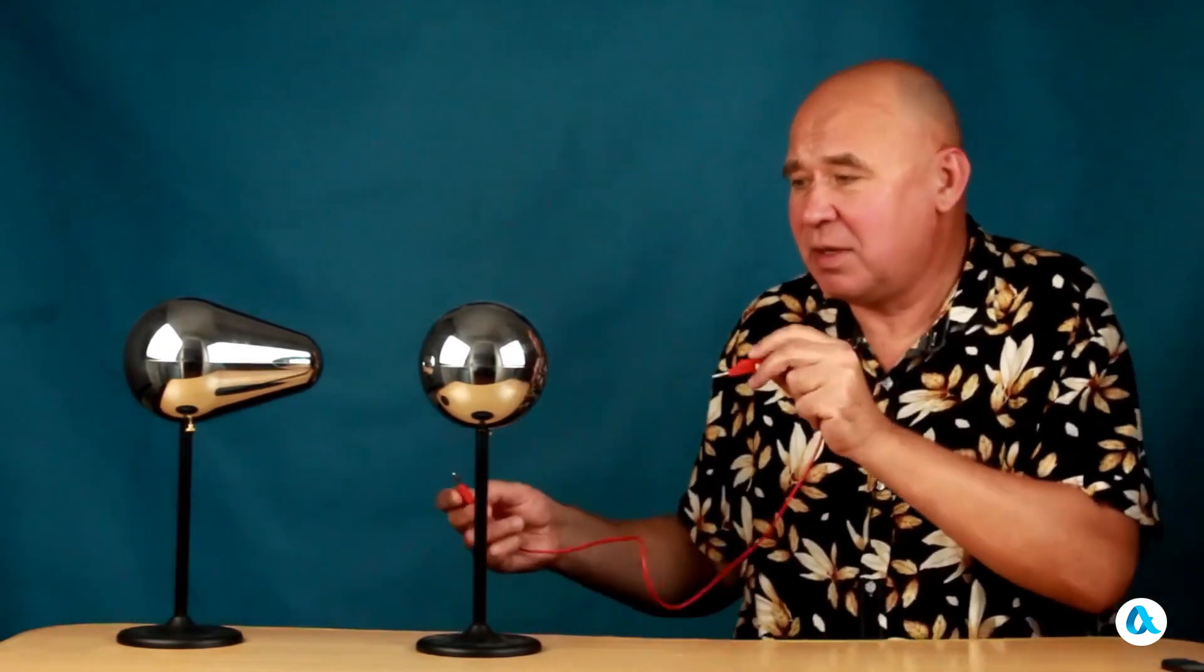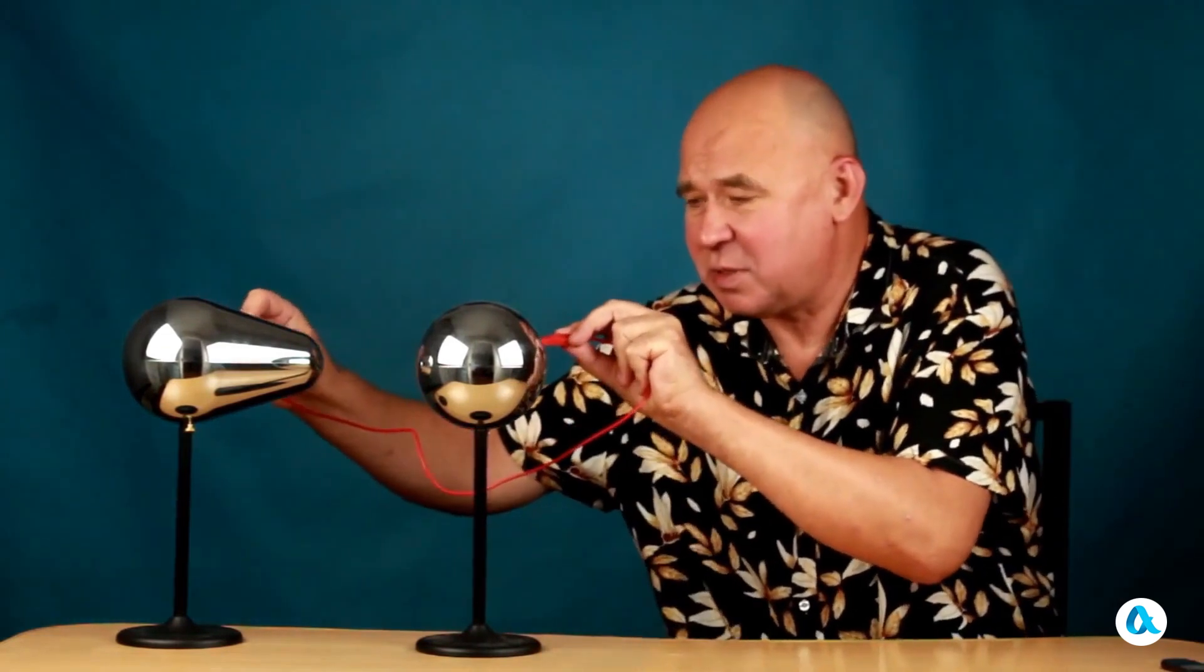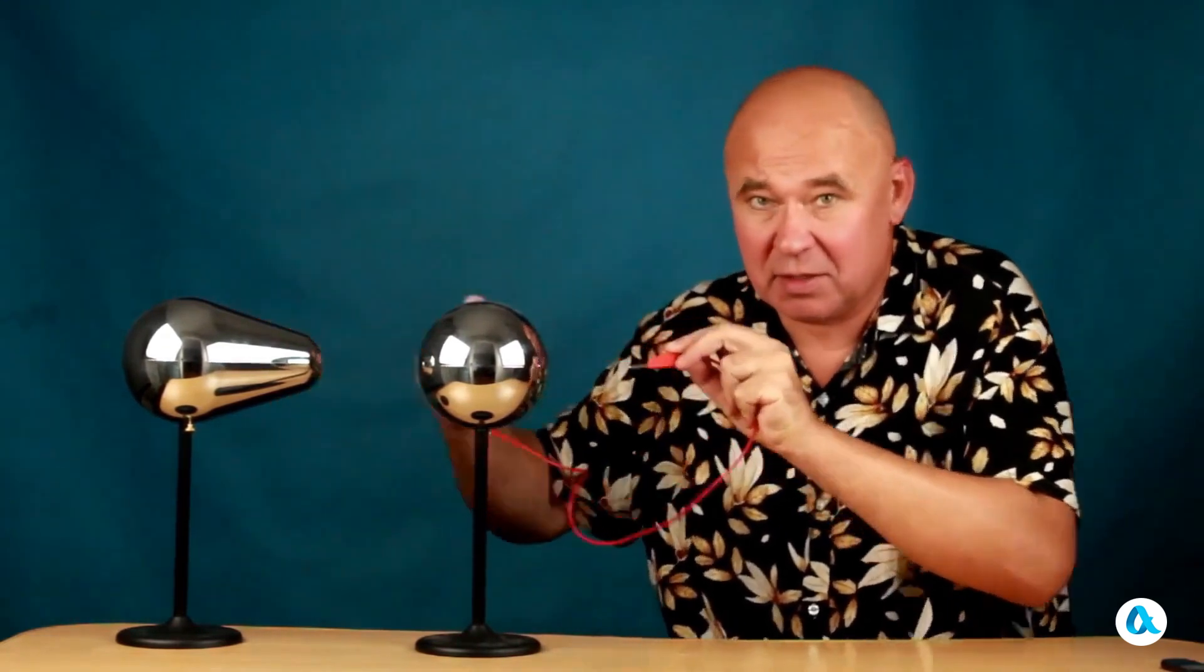We don't know this because we haven't yet answered the question: what exactly equalizes when we connect two charged bodies with a conductor? In communicating vessels, their levels equalized, or you could say the pressures at the two ends of the connecting tube equalized. And what here acts as the level or such pressure? To answer this question, we need to introduce the concept of electric potential.